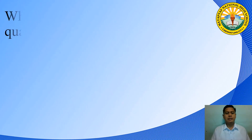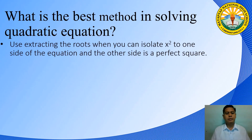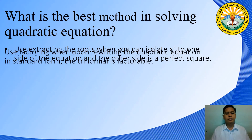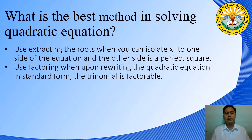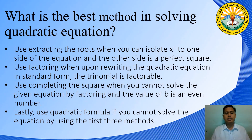What is the best method in solving quadratic equations? There is no best method — the method depends on the given equation. Here are some tips: use extracting roots when you can isolate x squared and the other side is a perfect square; use factoring when the trinomial is factorable; use completing the square when factoring doesn't work and b is an even number; and use the quadratic formula if the first three methods don't apply.